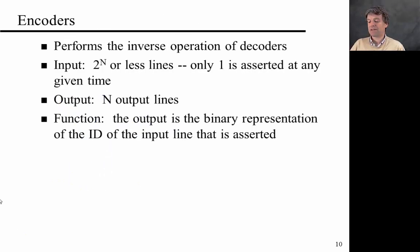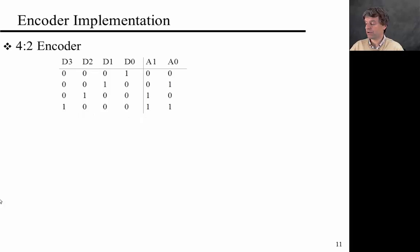So the next circuit element that we want to look at is the encoder. It kind of performs the inverse operation of decoder. So the input now are 2 to the n or fewer wires. And only one of the input wires is asserted at any given time. And the output is n output lines. So the function is essentially that the output is the binary representation of the ID of the input line that's asserted. So remember in the example of the phone system, it's like somebody presses the bell and that results in that person's phone number being displayed to the operator.